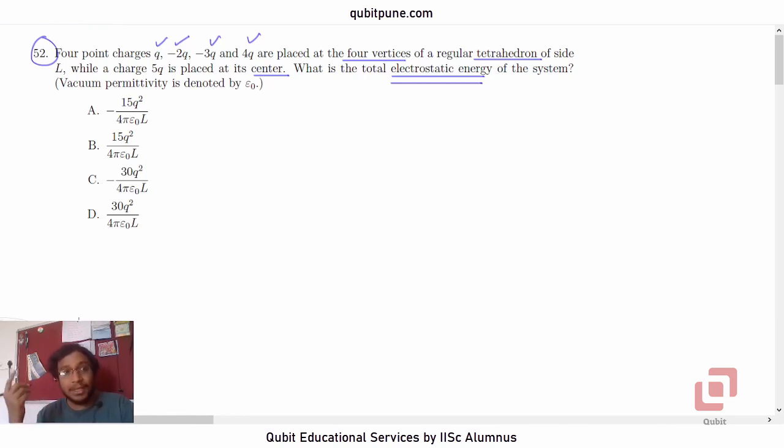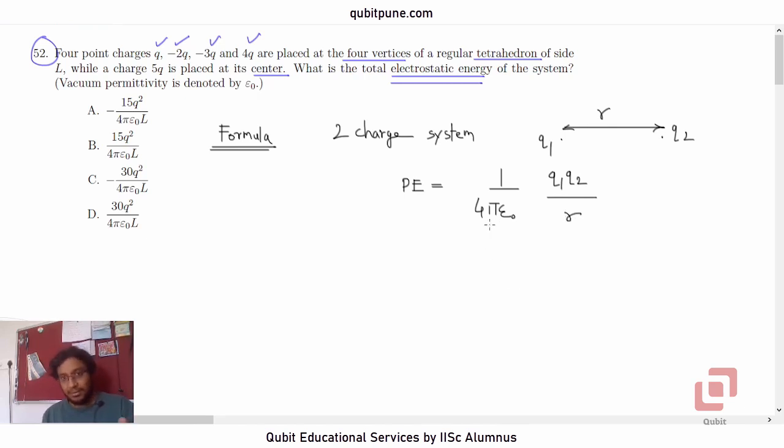I want to tell you two things we need to solve this problem. The first thing is the formula that we use to calculate the electrostatic potential energy of a two charge system. If we have charges q1 and q2 separated by distance r kept in vacuum, then the potential energy is one over four pi epsilon naught times q1, q2 upon r. That is the formula.